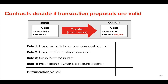Now let's try stepping through the contract again with a different transaction proposal. Does it meet our contract rules this time? If we look at this transaction, we can see that it has one cash input and one cash output, so that's fine. We can see that it has a transfer command, so that's fine. But if we look at the value of the cash inputs, we can see that it's different to the value of the cash outputs — someone's trying to issue themselves a lot of cash — and so a contract verification exception is thrown, and the transaction proposal is immediately rejected by the contract.